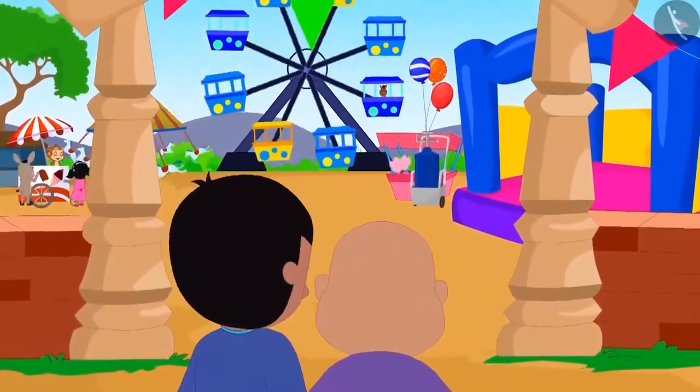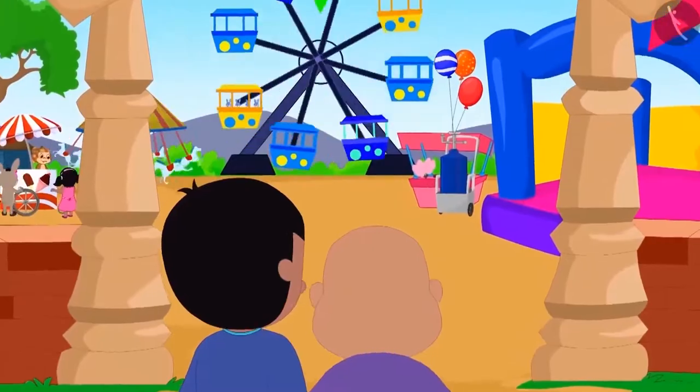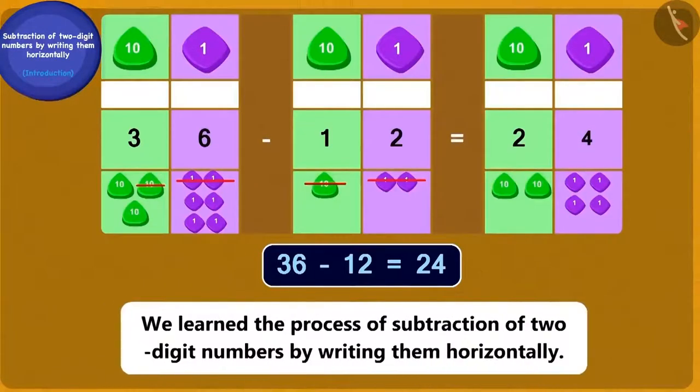Let us see what mischiefs they do in the next chapter. Children, in this lesson, we learned the process of subtraction of two-digit numbers by writing them horizontally.